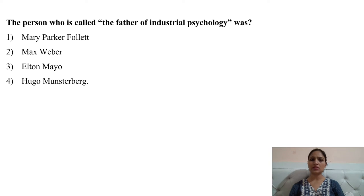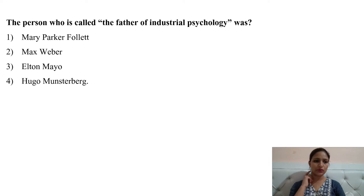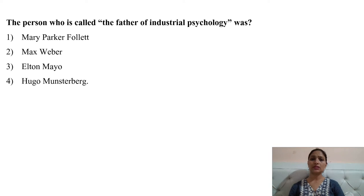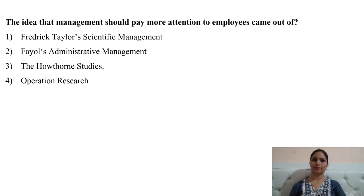Next question: the person who is called the father of industrial psychology was — options are: Mary Parker Follett, Max Weber, Elton Mayo, and Hugo Munsterberg. The right answer is Hugo Munsterberg — he is known as the father of industrial psychology.